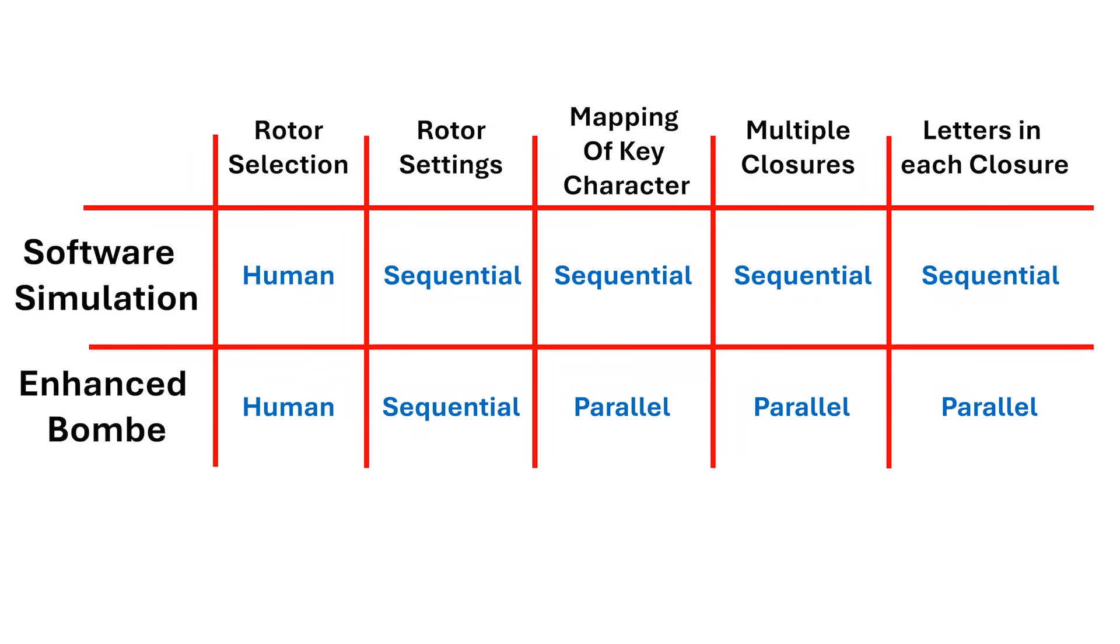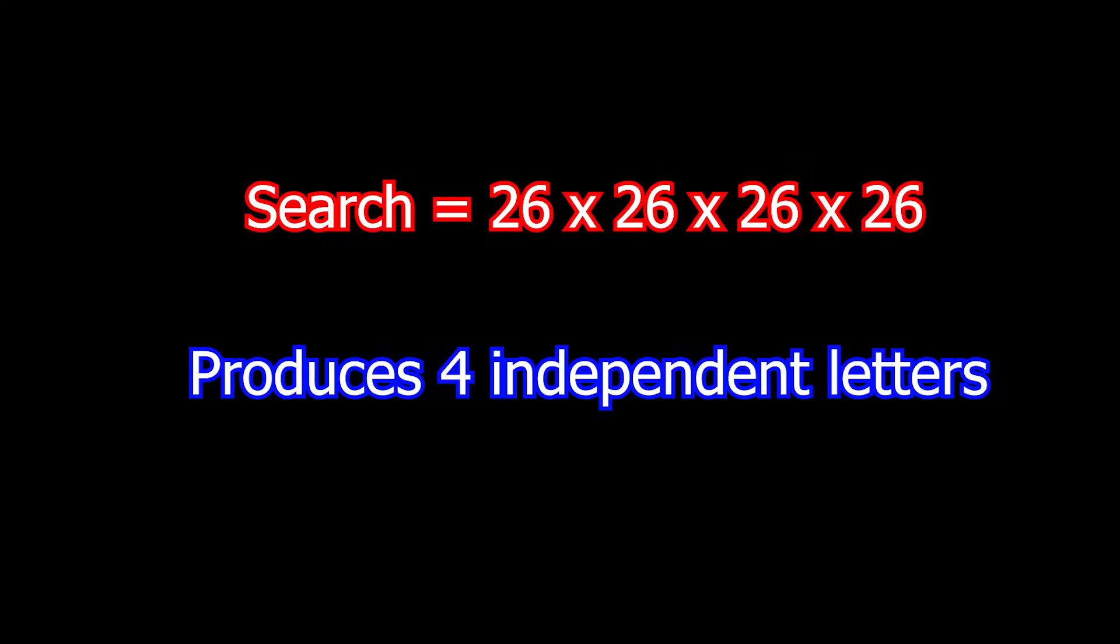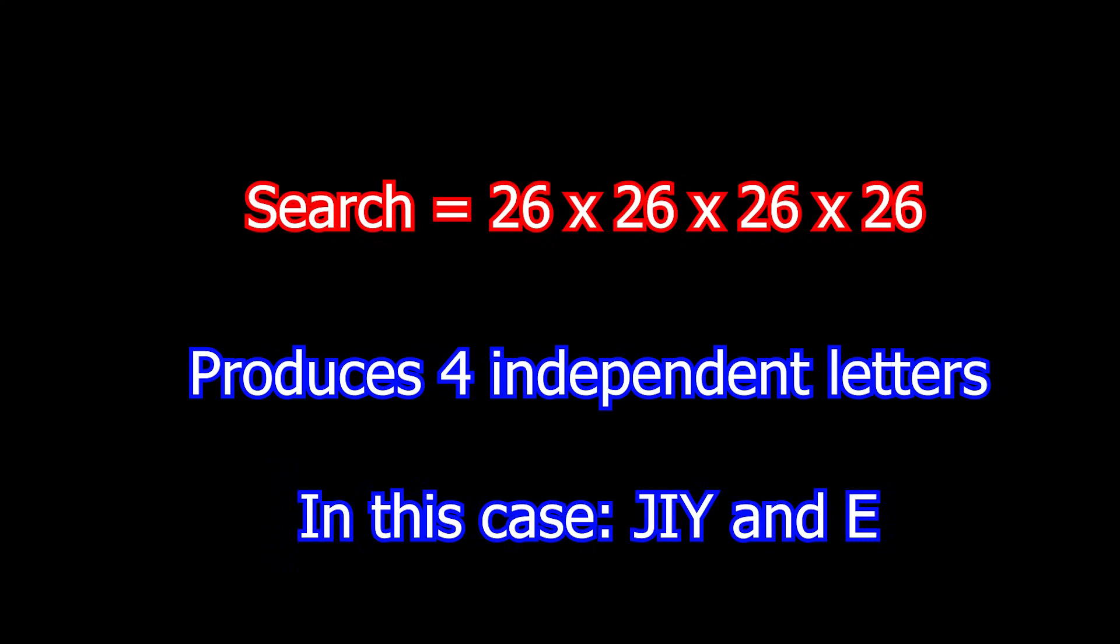Okay, now the last thing I want to look at in this video, is how the key character mapping search is done in parallel. We know that the bomb is performing a 26x26x26x26 search, because it produced four independent characters from A to Z. Three are for the rotor setting, and one for the key character match.